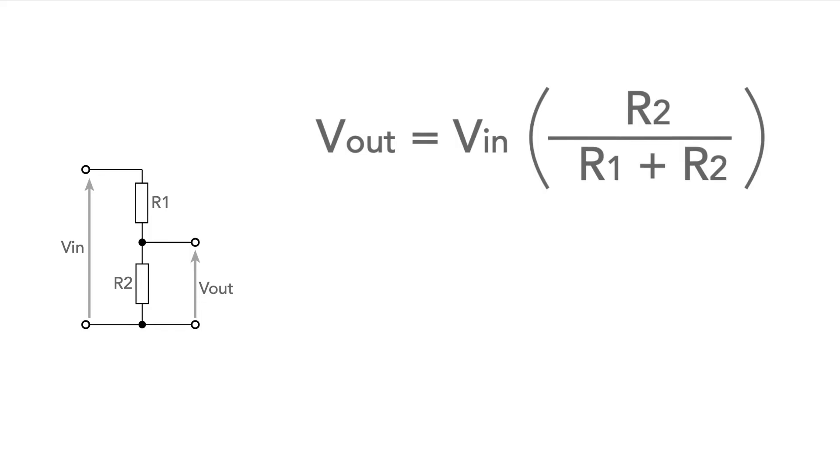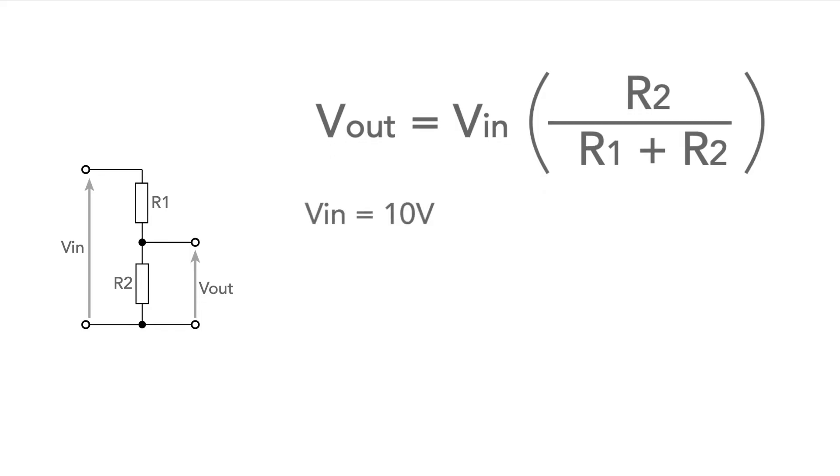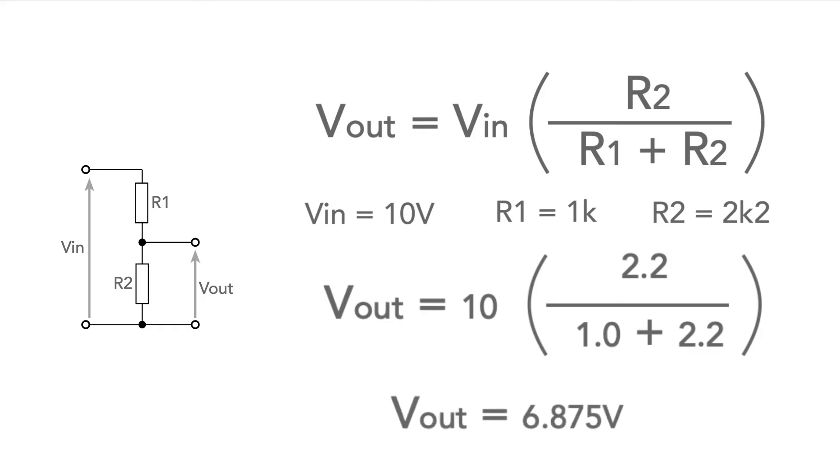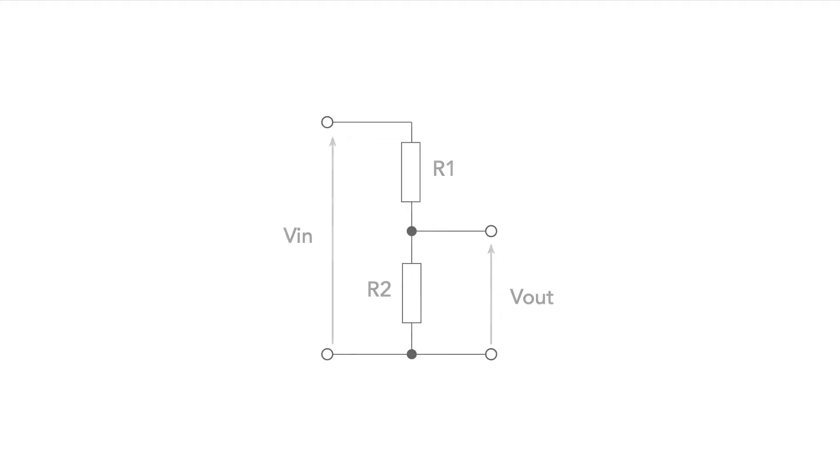So if we have an input of 10 volts and using standard resistor values, let's say R1 is one kilo-ohm and R2 is 2.2 kilo-ohms, then we put the values into the equation and we can see that the output potential is 6.875 volts. If we calculate everything out in this way, we can see how the potential divider divides the input potential or voltage down to a lower value.